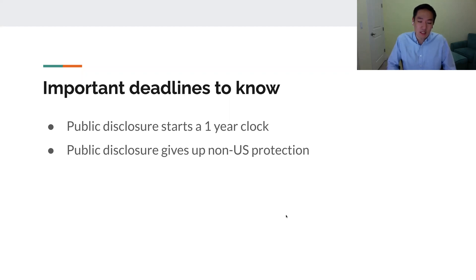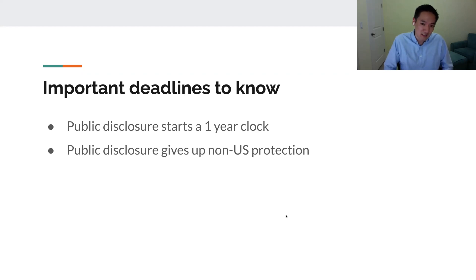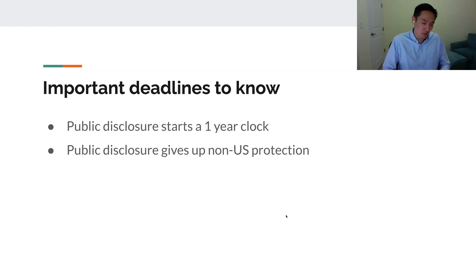Here are some important deadlines you need to know. If you ever publicly disclose your idea, it starts a one-year clock in the US within which you have to file a patent. Otherwise, your public disclosure will serve as prior art and prevent you from being able to get a patent on your idea.